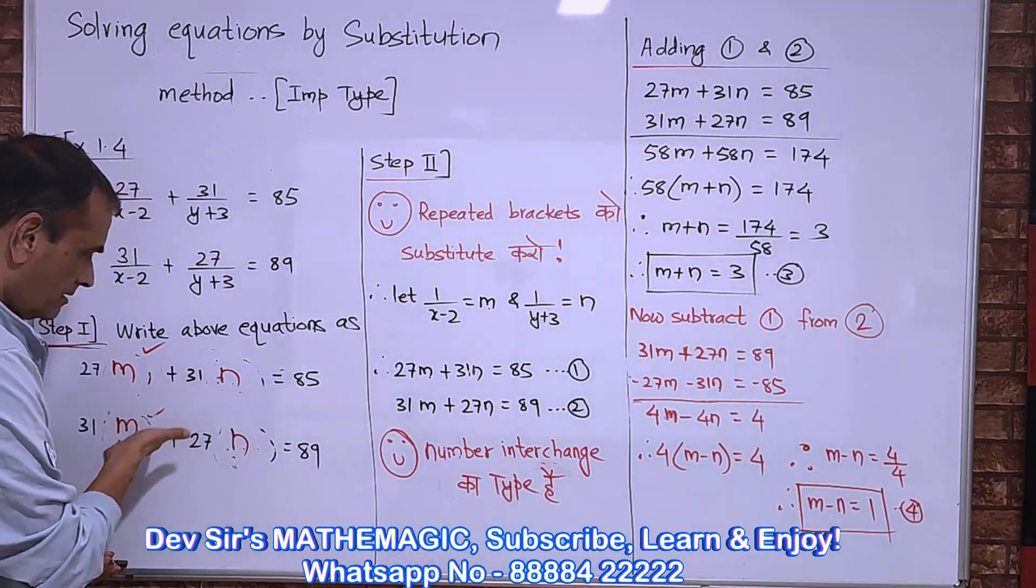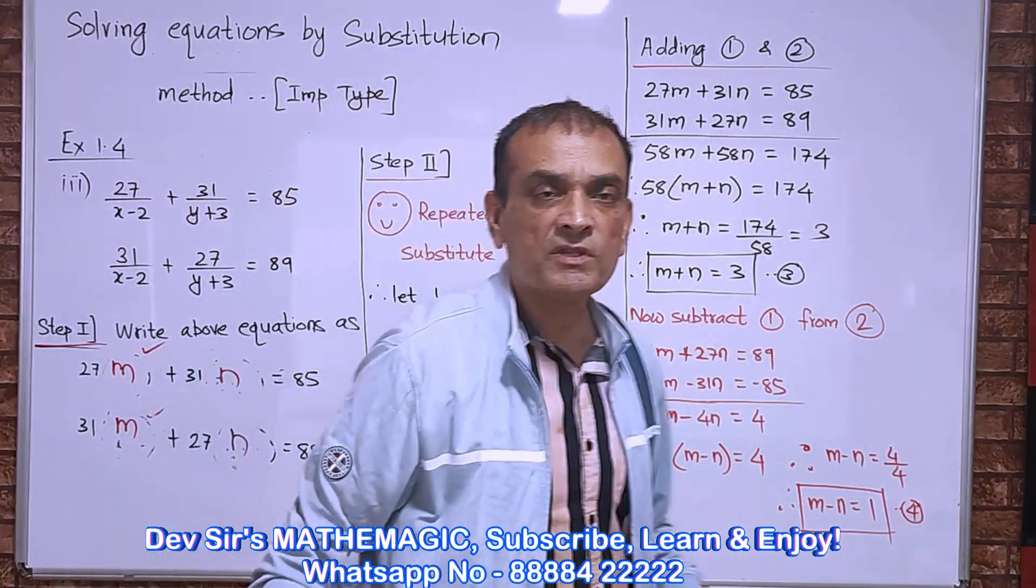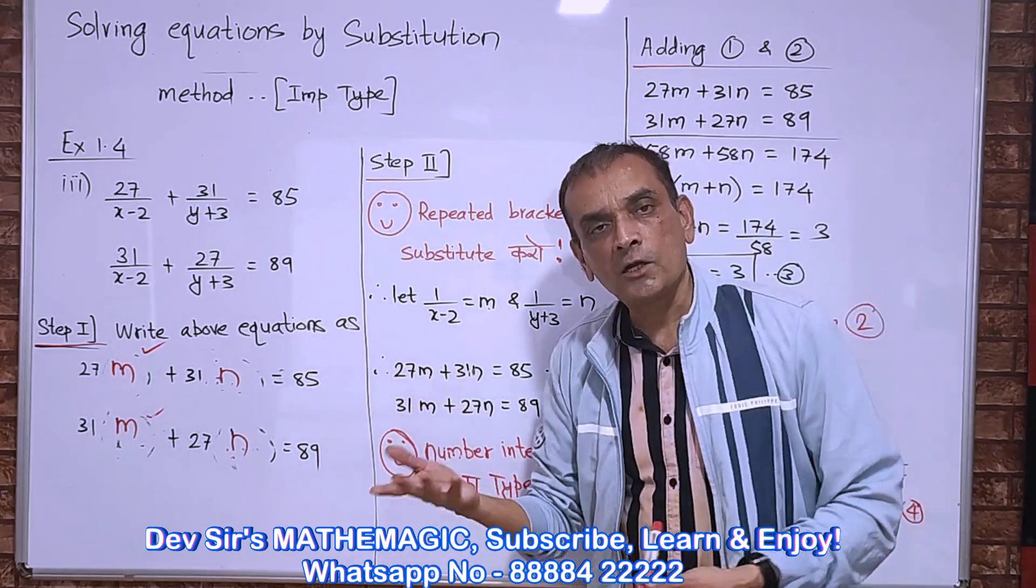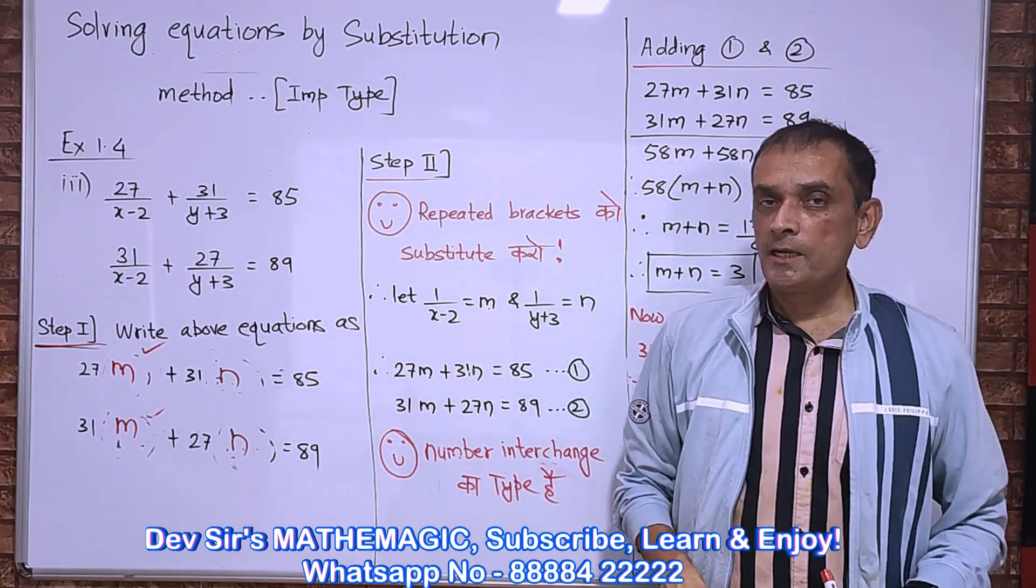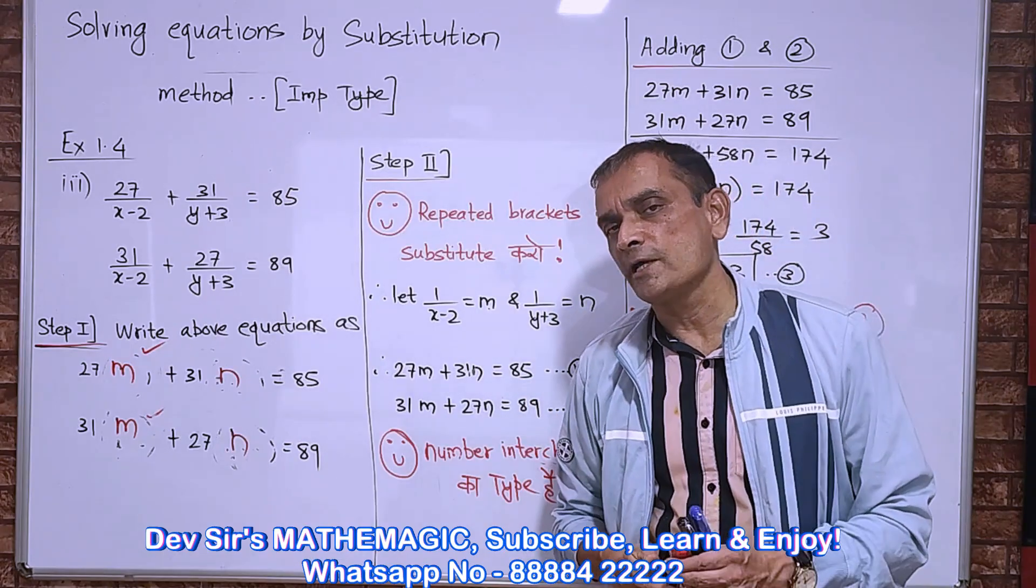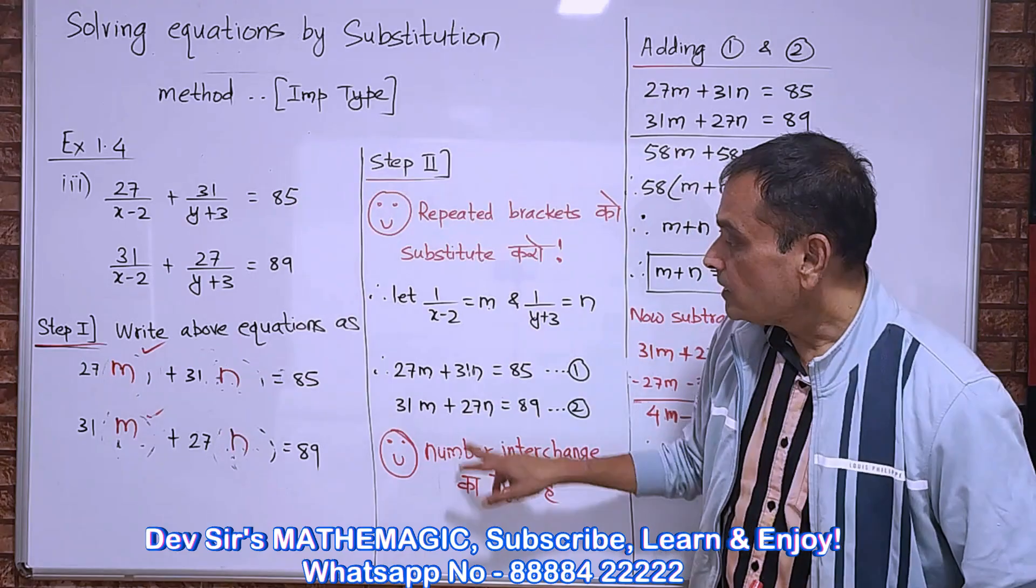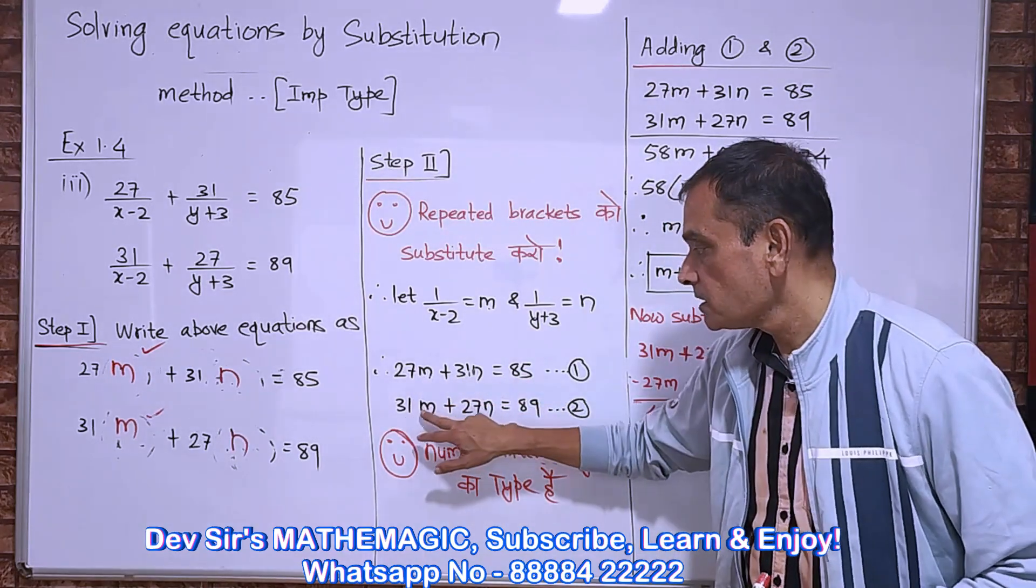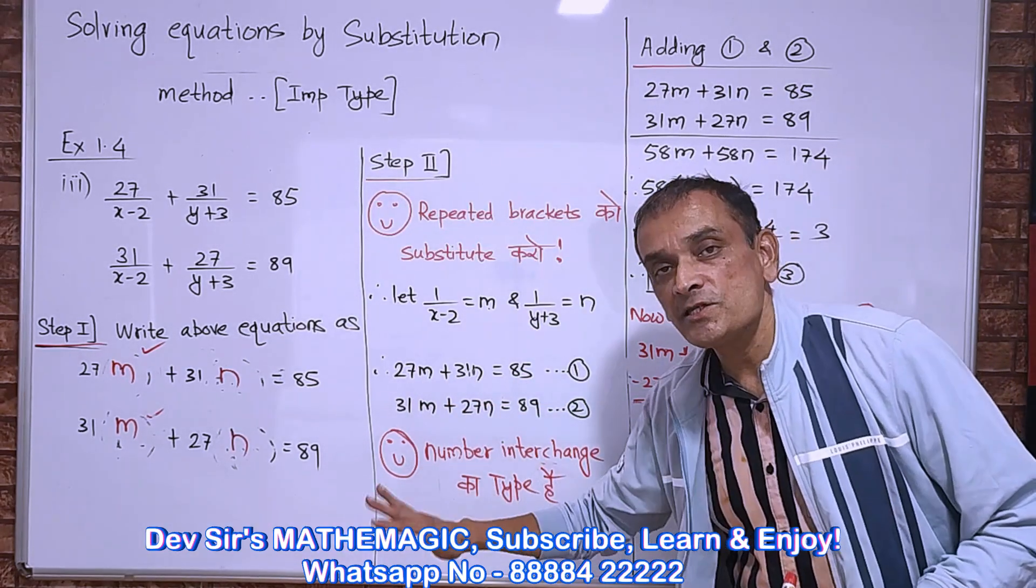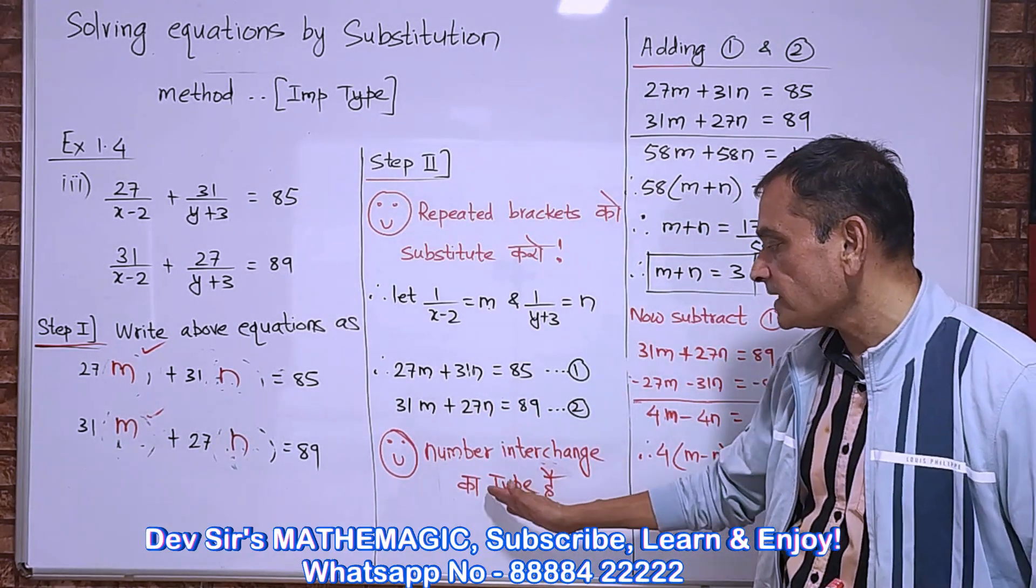Now m and n both variables have come up. We haven't kept them in the denominator. So that is the reason that we make the substitution. These are our two new equations with variables in the numerator. Now we solve in the usual way. If we get big numbers with interchanging them, numbers interchanged ka type hai.